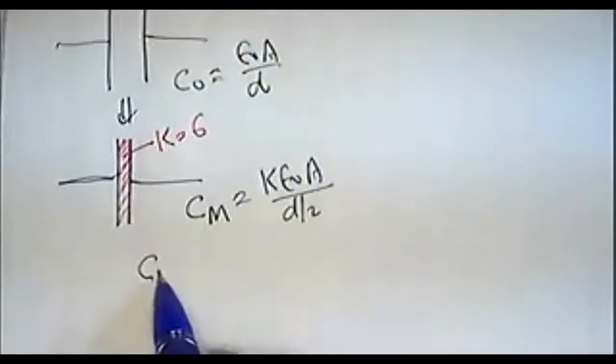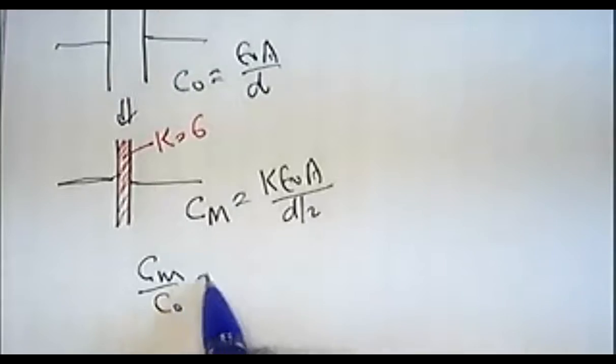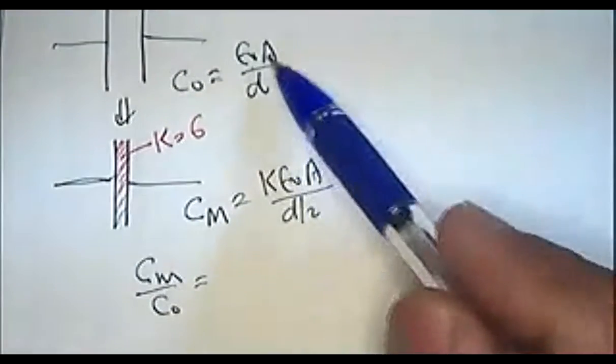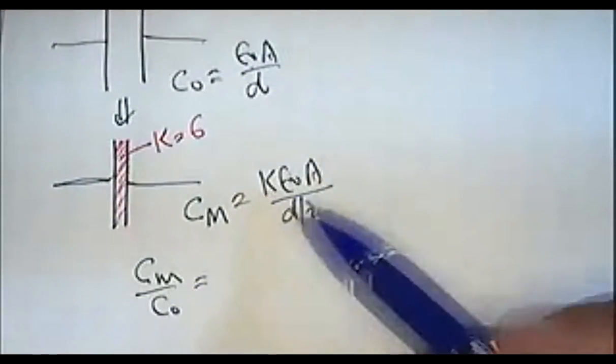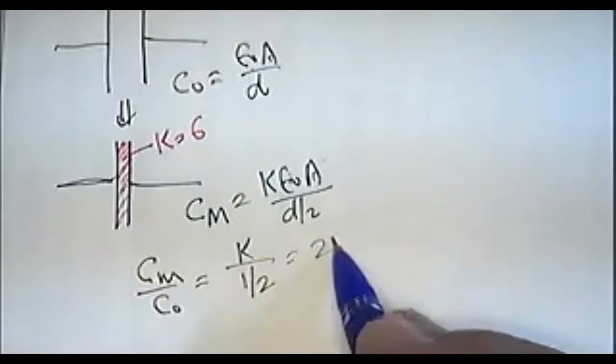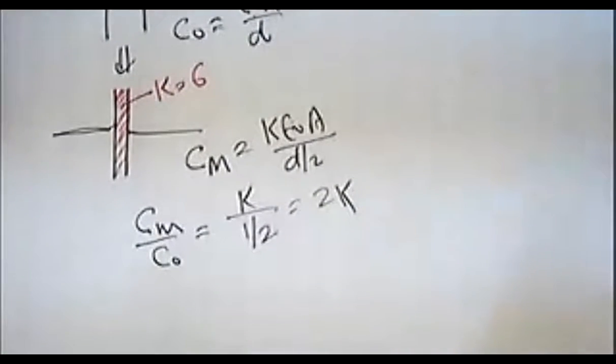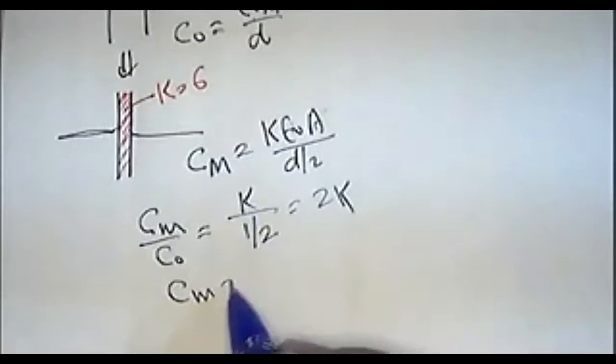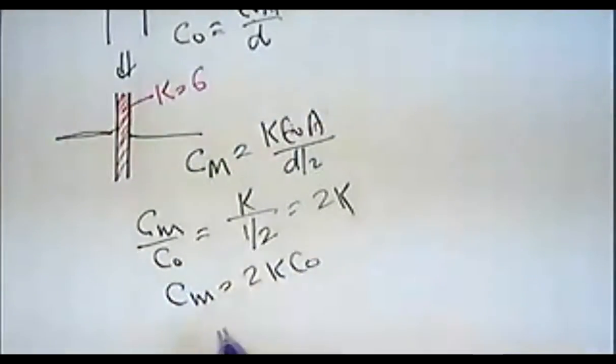So this is K epsilon0 a by d by 2. K divided by 1 by 2 means 2K times epsilon0 a by d. So c equals 2K c0.